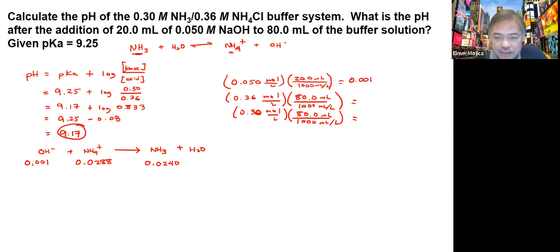The number of moles of hydroxide will react with the ammonium ion. All of that will react with it, so that same amount will be used by the ammonium ion. That same amount will also form into ammonia. This will be gone. At the end, you will have 0.0288 minus 0.001, so that is 0.0278, and this one will become 0.025.